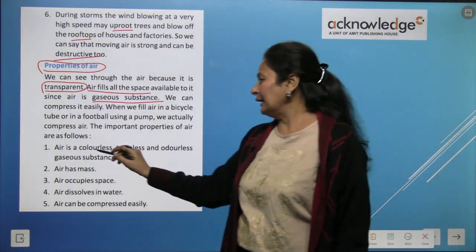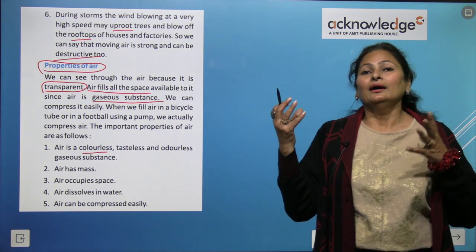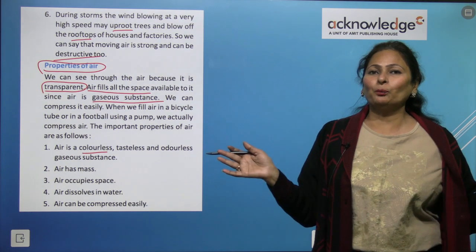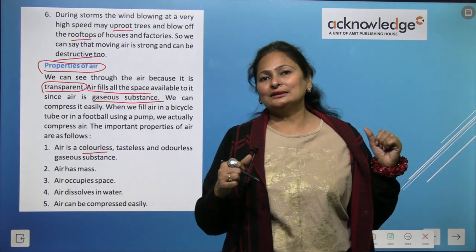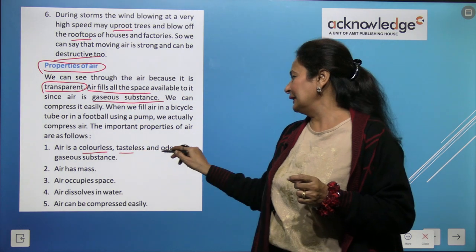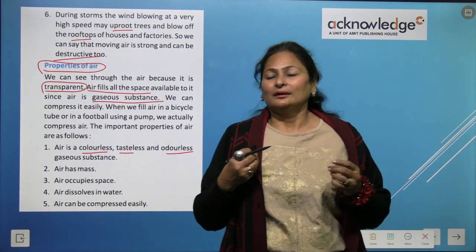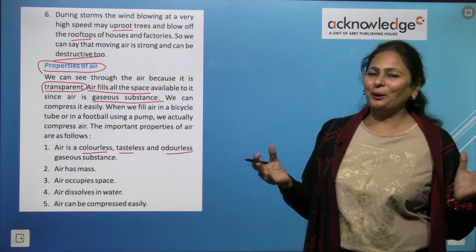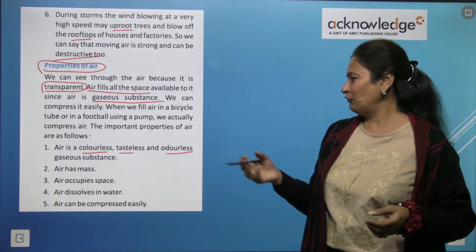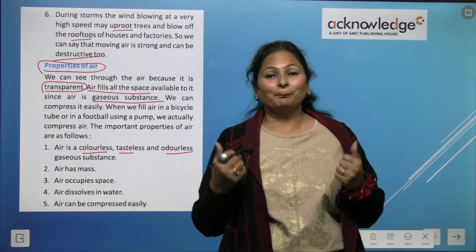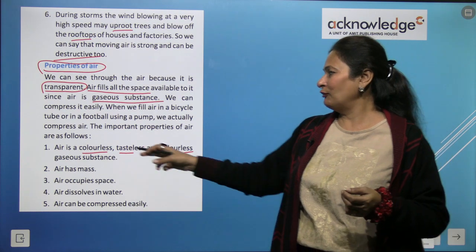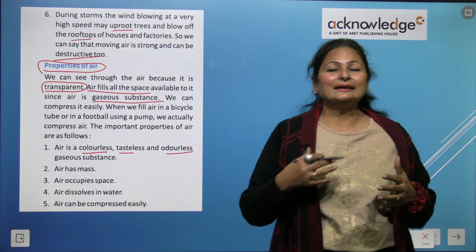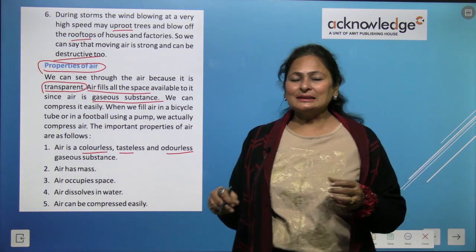Air is colorless — you will not find any color in air. It is tasteless and odorless. However, if impurities like smoke and dust are mixed in, air gets polluted. Some gases like carbon dioxide are slightly sour in taste, and room fresheners give temporary fragrance to air.